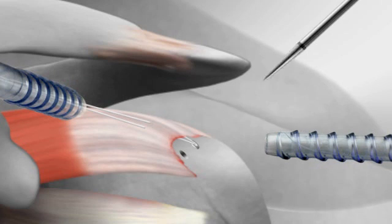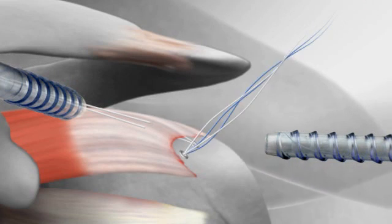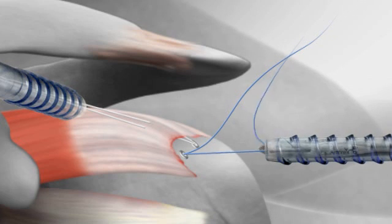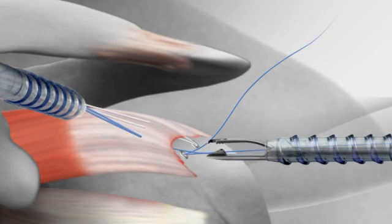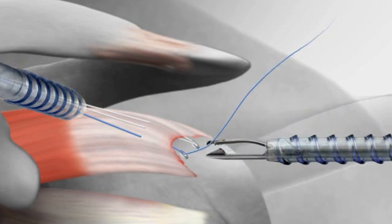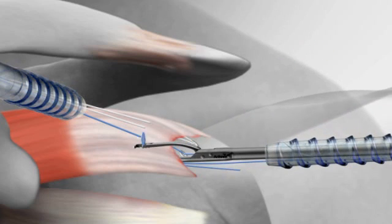The process is then repeated with the second anchor. Sutures in the second anchor are a different color to allow the surgeon to easily distinguish them from the first anchor. For average sized tears, two medial anchors are used.